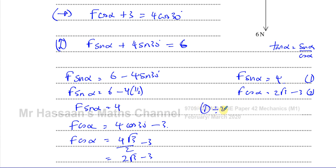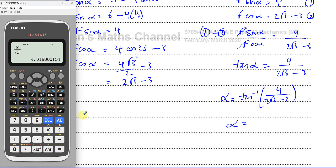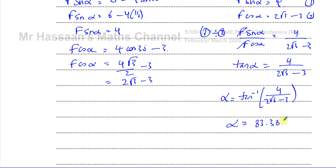When we have equations involving both sine and cosine, we can use the identity tan alpha equals sine alpha over cosine alpha. Dividing equation one by equation two, the F's cancel and we get tan alpha equals four over two root three minus three. Taking the inverse tangent gives alpha equals 83.381 degrees, so alpha to one decimal place is 83.4 degrees.